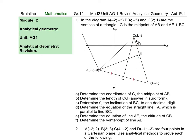First, we have to determine the coordinates of G, the midpoint of AB, so we will use the midpoint formula. Question B: determine the length of CG, so we will use our distance formula with the new coordinate.